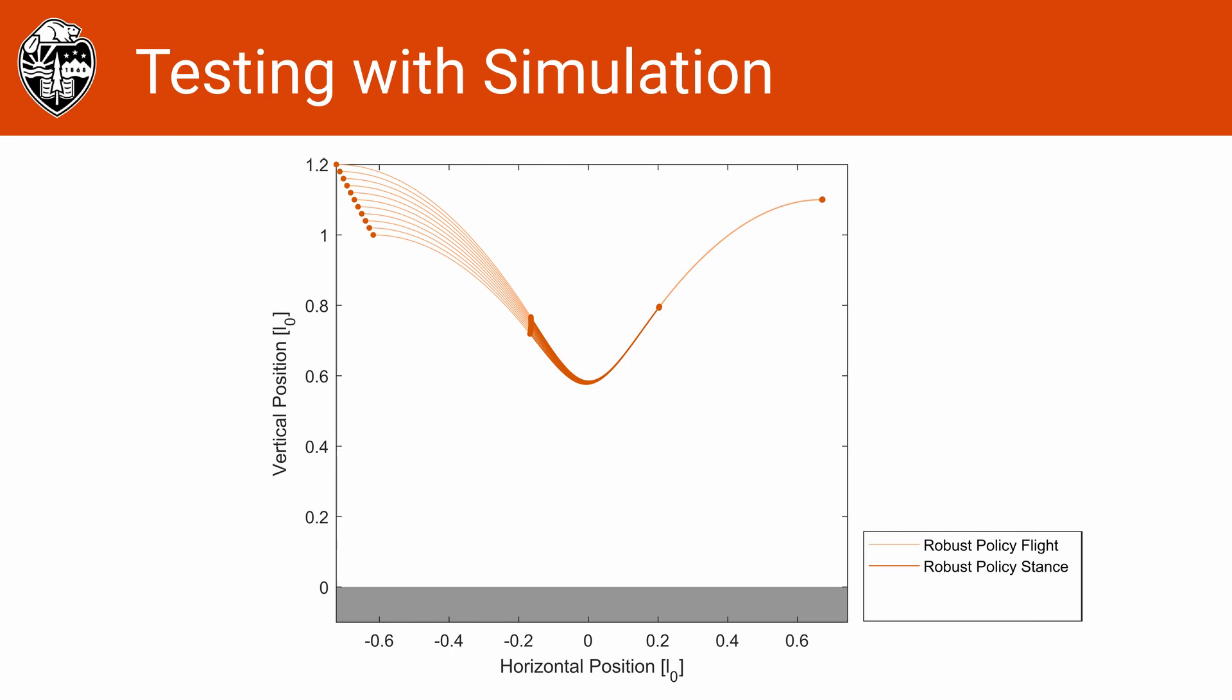Looking at an example simulation result for both of these policies, we see drastically different results. All of the robust apex states in this example have less than one one-thousandth of the nominal leg length for error in the final height and one one-thousandth of the forward velocity error in the final forward velocity.